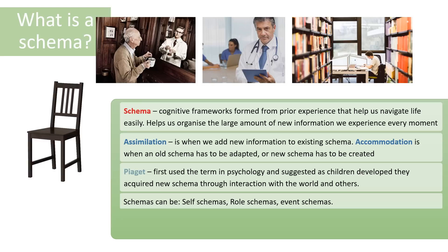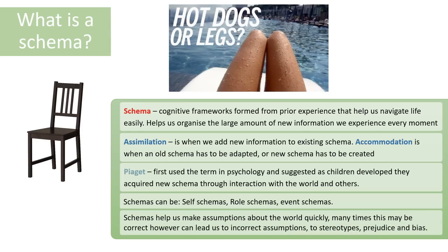Most of the time these schemas are correct, but these mental shortcuts about how certain people behave, or how objects work in the world, can often lead us to incorrect assumptions. They can lead us to stereotyping people, to prejudice, and to being biased. For example: hot dogs or legs? Everything about the picture leads us into a mental shortcut to assume they may be our legs — just an example of how our mental schemas could lead us into error.